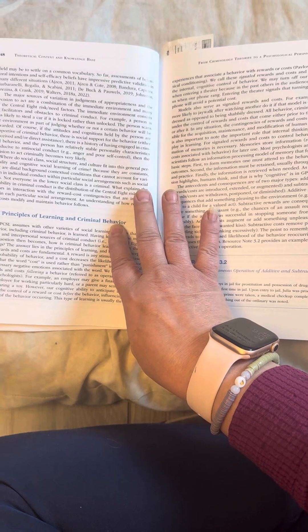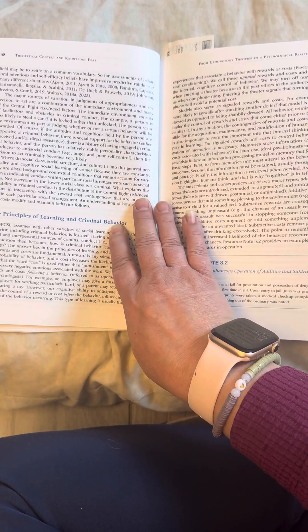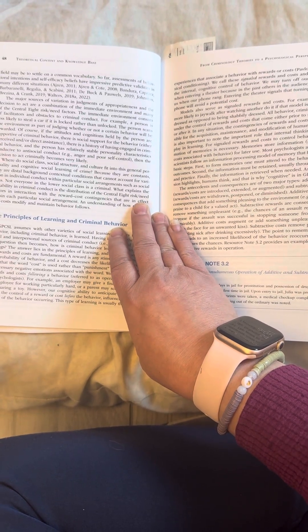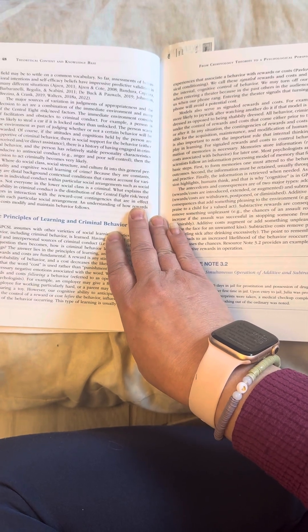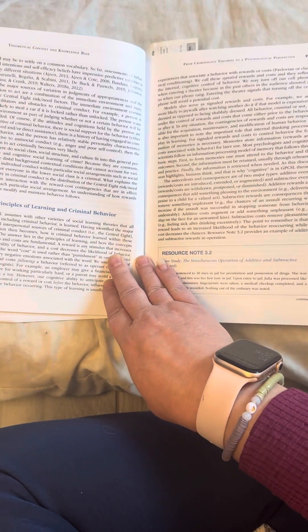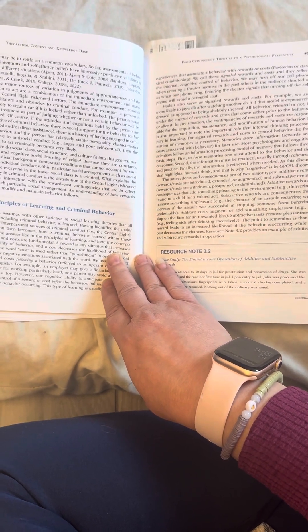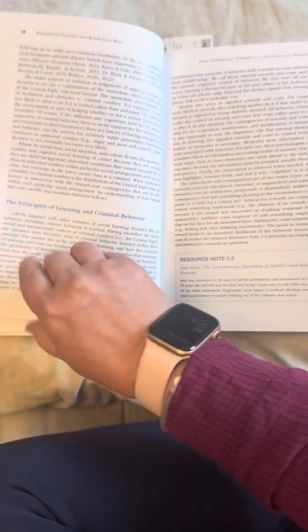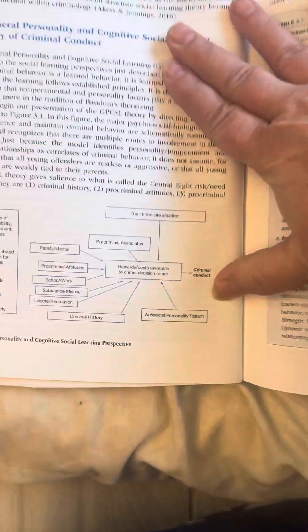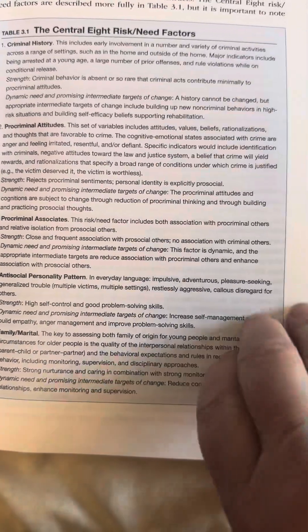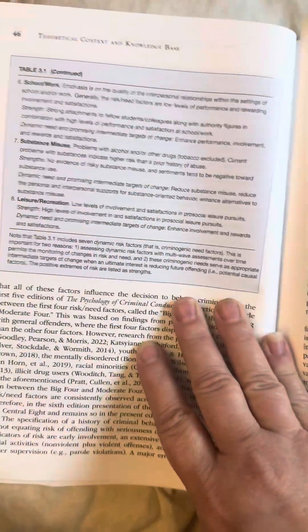They are distal background, contextual conditions that cannot account for variation in individual conduct within particular social arrangements such as social class. Not everyone in the lower class is a criminal. What explains the variability in criminal conduct is the distribution of the central eight risk-need factors in interaction with the reward-cost contingencies that are in effect within each particular social arrangement and understanding of how rewards and cost modify and maintain behavior follows. You can go ahead and turn this back because you're going to need this information should you want to pause the video and write that down. And then here is the central eight risks, need factors. Should you wish to pause this, this is important notes. And then here is table 3.1 continued.